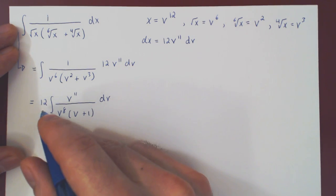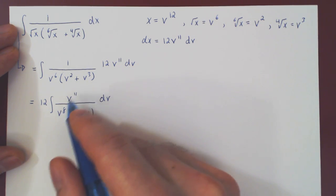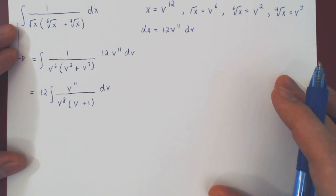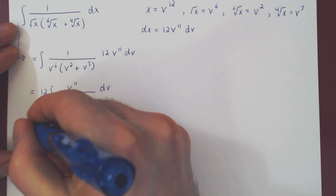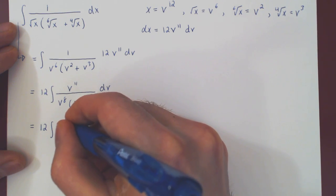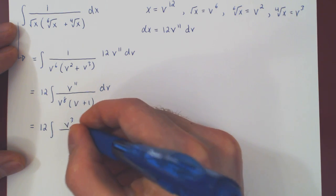And so there is now one more simplification. We can cancel, of course, these two and have a single v cubed on the numerator. And what we're left with is surprisingly simple. We have to integrate the rational function v cubed over v plus one.